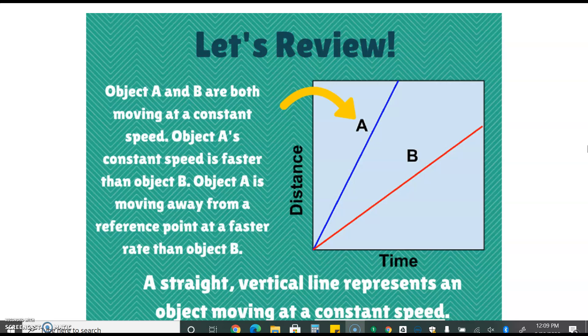A straight vertical line represents an object moving at constant speed. The steeper that straight vertical line the faster that object is moving.